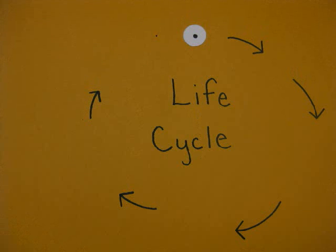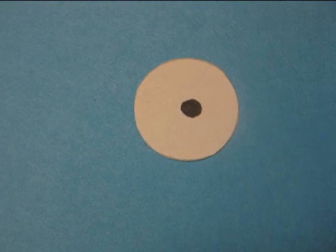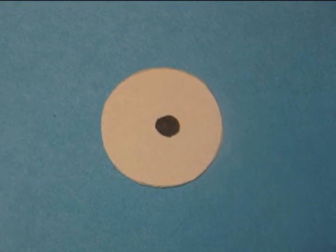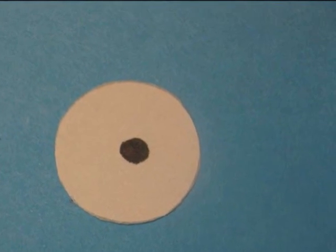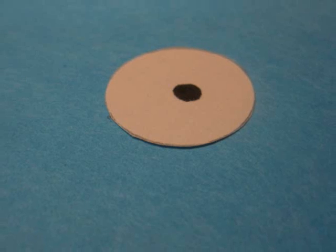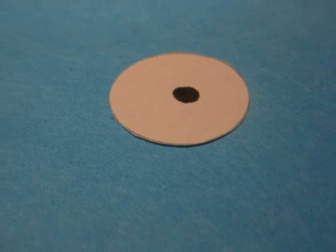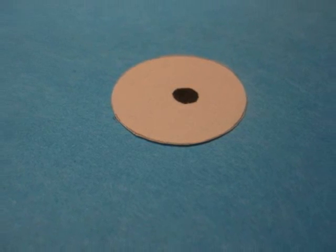The first stage is the egg, which starts out as a single cell. Thousands can be laid at once. They float in water and become surrounded by a jelly-like covering, which protects them.